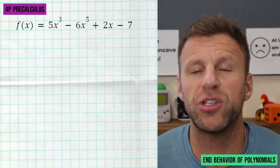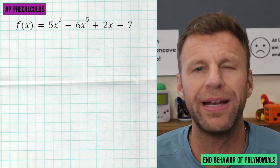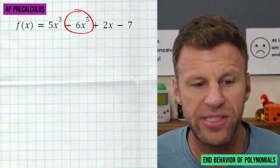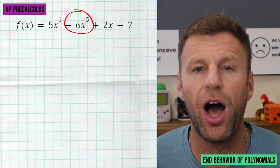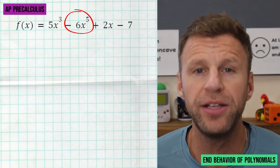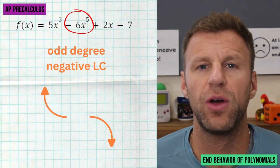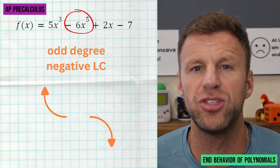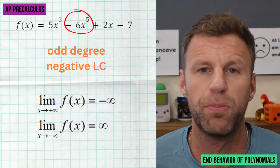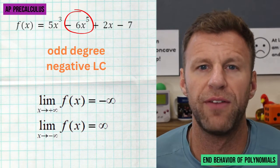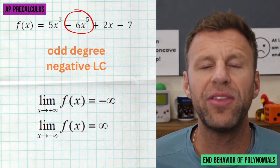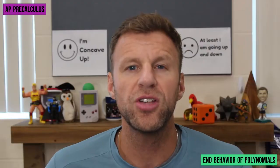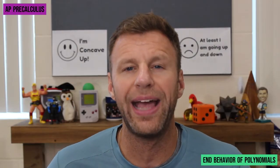In this next example, the first thing we do is analyze the leading term. Notice the leading term is not necessarily the first term written — it's the term with the highest power, the degree. We see the degree is five and the leading coefficient on that x to the fifth is negative six. So we have an odd degree polynomial with a negative leading coefficient — the right side is going down and the left side is going up. The limit as x approaches positive infinity is negative infinity, and the limit as x approaches negative infinity is positive infinity.